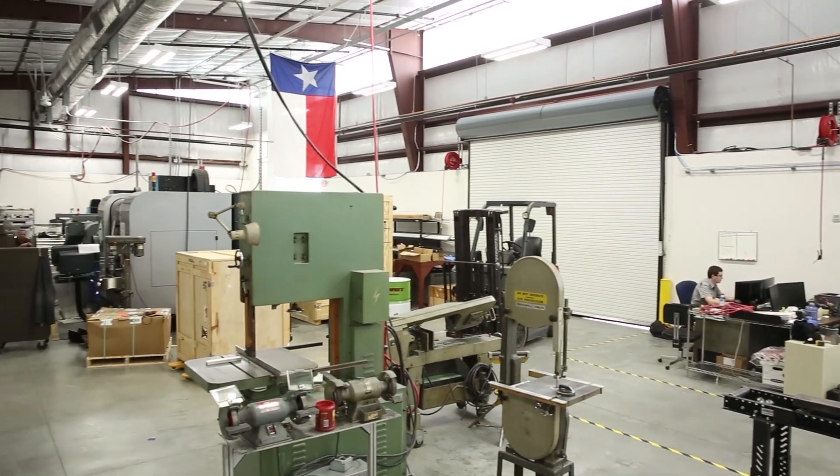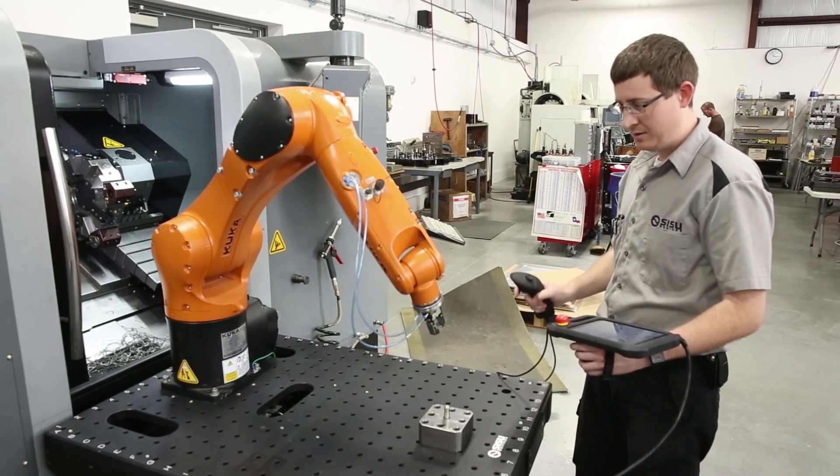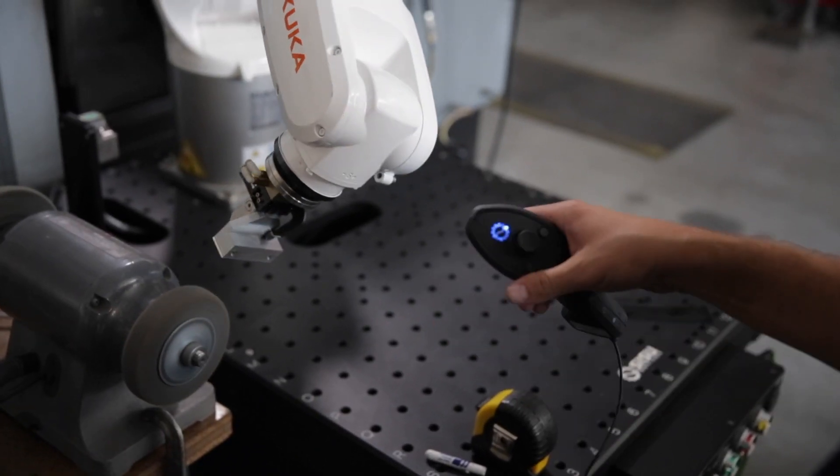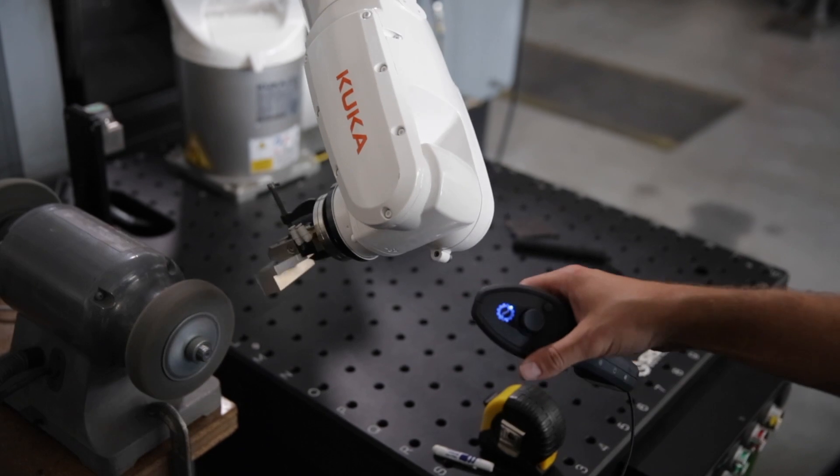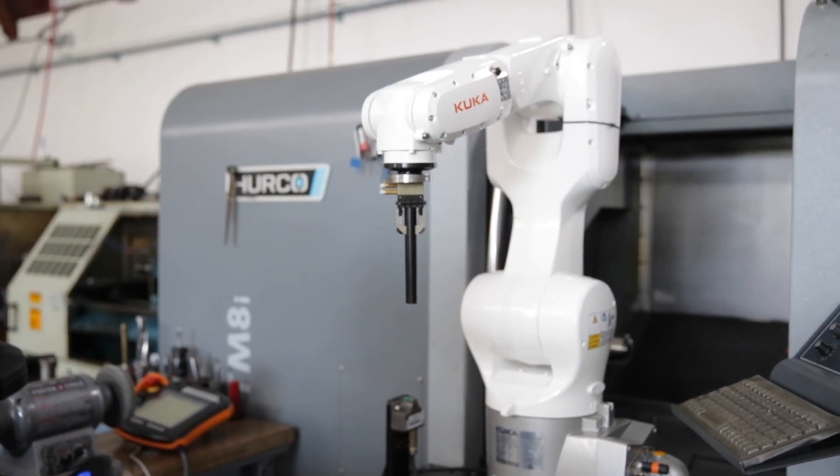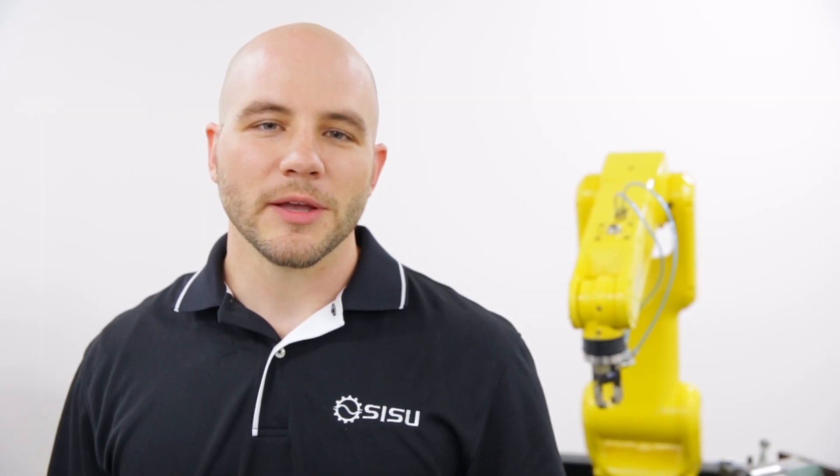In our machine shop, we have high mix, low volume, and constant part changeover. Long programming times have made robots completely impractical for us. With this system, our machinists wheel the robot over, and within minutes, they write their own program. And we've never sent them to robot training. Simple programming with KAISU means that thousands of new applications are now available to end users and robot integrators.